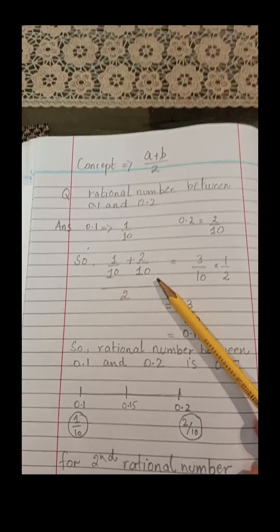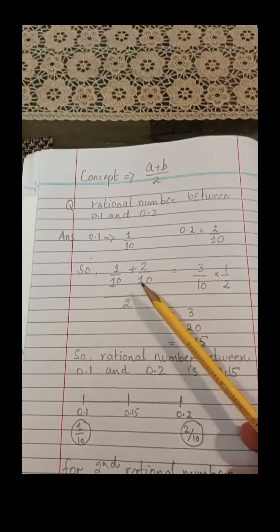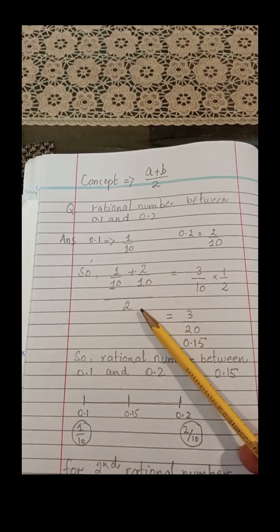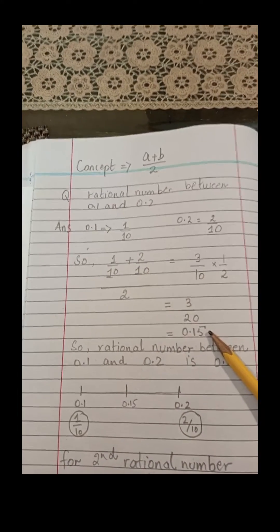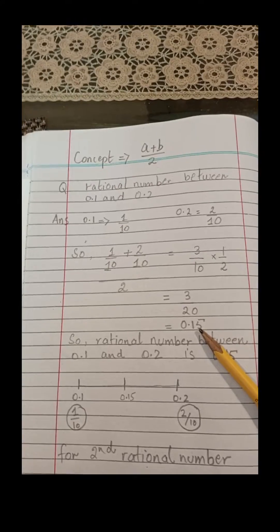Using the simple concept of adding both numbers and dividing by 2, we get the first rational number between 0.1 and 0.2, which is 0.15.